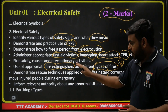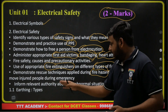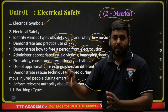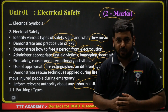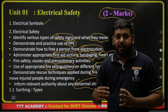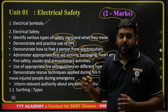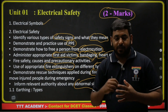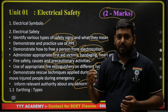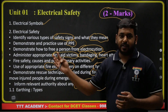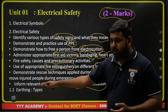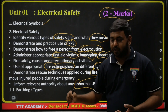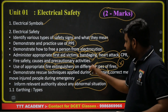Another topic is: inform relevant authority about any abnormal situations. If an accident happens suddenly, call an ambulance for medical emergencies. If an electrical wire is cut on the road, call the electricity board. In case of fire, call the fire station. This is the main responsibility in emergency situations.